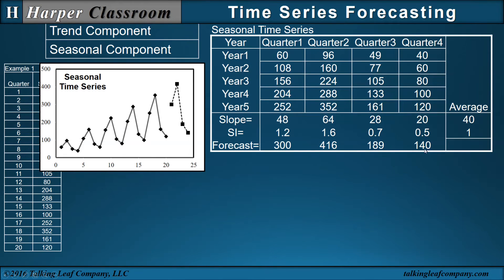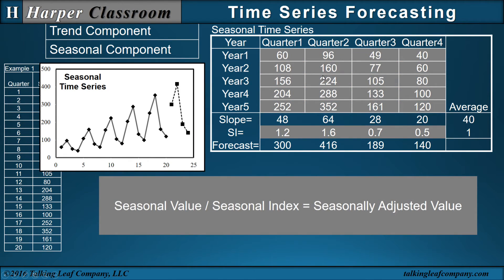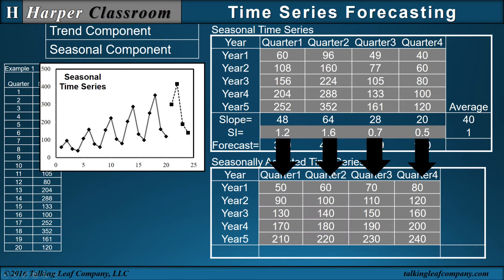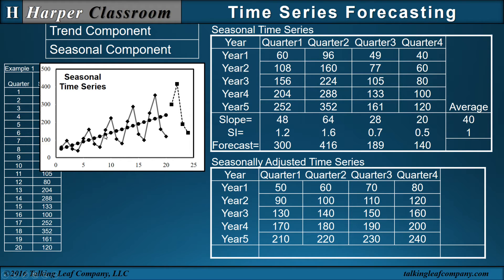Let's go a little deeper. We have our seasonal time series and seasonal indexes. If I divide my seasonal value — the time series — by my seasonal index, I get my seasonally adjusted value or seasonally adjusted time series. Dividing every quarter by its respective seasonal index and plotting it shows the seasonally adjusted trend, where each quarterly slope from one year to the next is 40, but the quarterly slope from quarter one to quarter two is 10. From quarter one in year one to quarter one in year two is 40 — that's the seasonally adjusted slope.